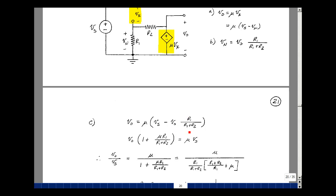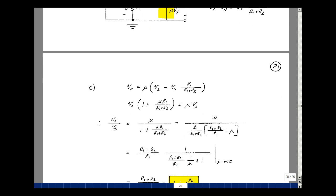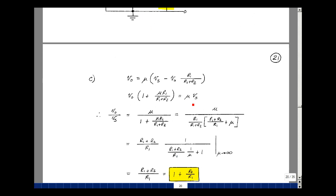Substitute this back over here. So Vout is equal to mu times Vs minus Vn, which is Vout R1 over R1 plus R2. Let's put this on the other side of the equation. So I've got Vout times 1, and then I've got Vout times mu R1 over R1 plus R2, and then I've got mu times Vs. So then I can solve for Vout divided by Vs.